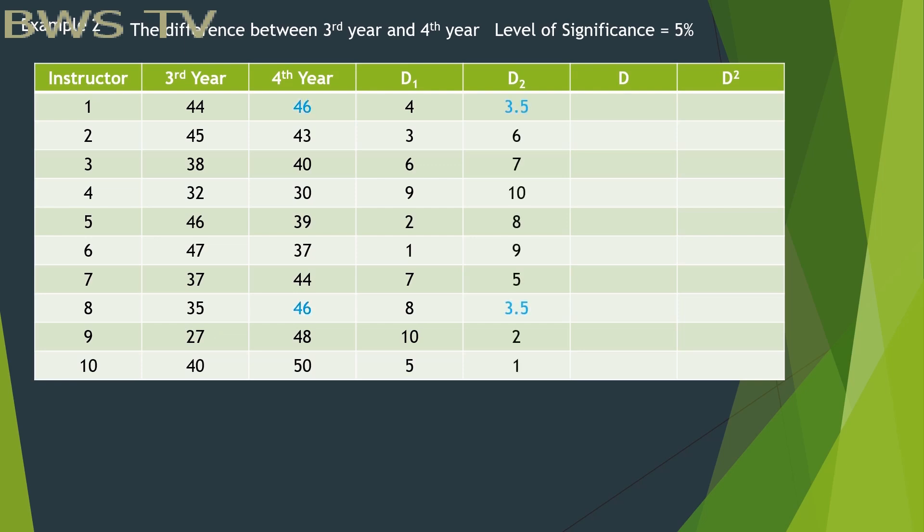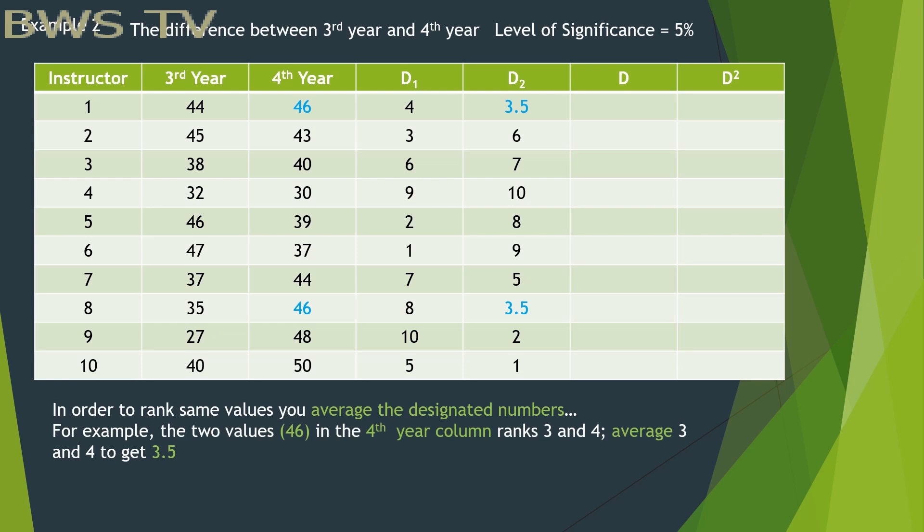As you can see, there are two equal numbers in column 2. In order to rank the same values, you average the designated numbers. For example, the two values 46 in the 4th year column rank 3 and 4. Average 3 and 4 to get 3.5.